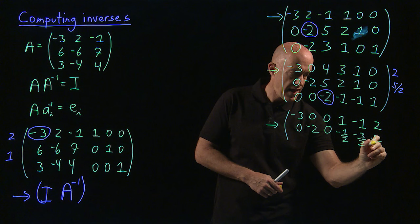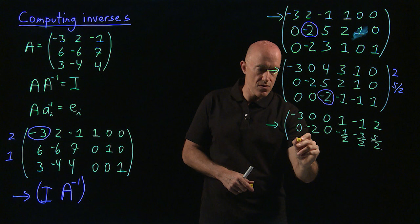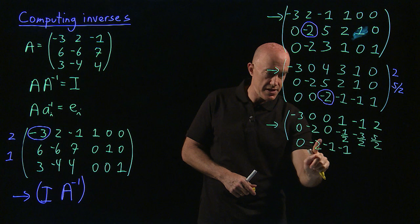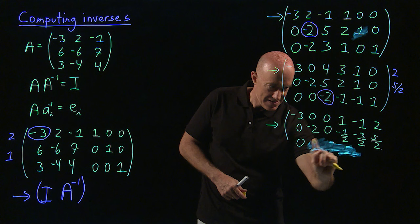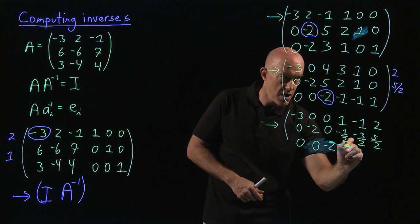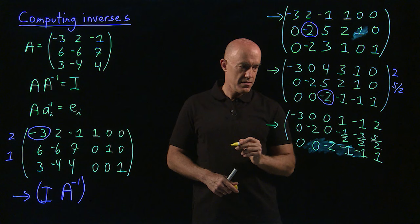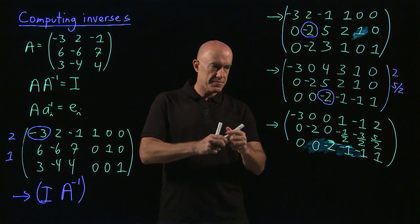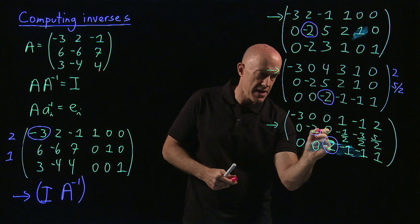And the last row is zero, zero, minus two, minus one, minus one, one. We now have the matrix in a form where the left side has pivots minus three, minus two, minus two on the diagonal. Last step: we need to convert those pivots — minus two, minus two, minus three — to one.